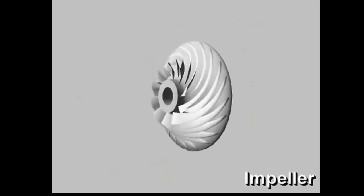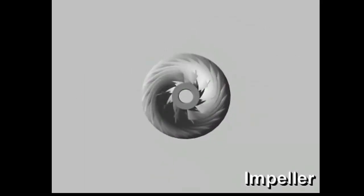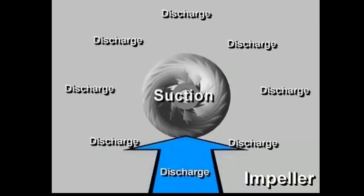The impeller is a rotating circular disc with curved blades that is driven at high speed by the electric motor. As the impeller rotates, it moves refrigerant vapor from the suction opening in its center to the outer edge using centrifugal force.